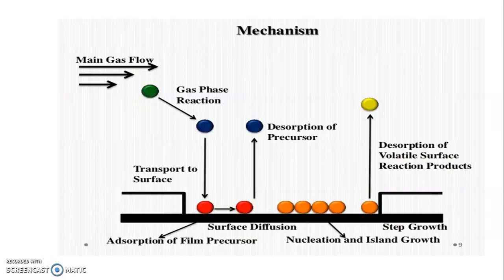The mechanism works as follows: first the main gas flows, then gas phase reactions occur, followed by transport to the surface. Surface diffusion takes place with the help of absorption of volatile precursors. Some desorption of precursors goes in the upward direction. Then nucleation and island growth occur. Finally, desorption of volatile surface reaction products exit outward.